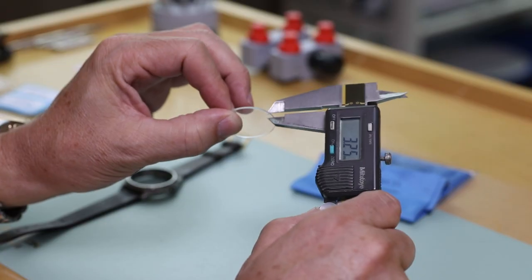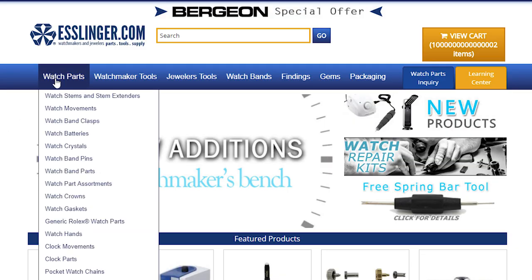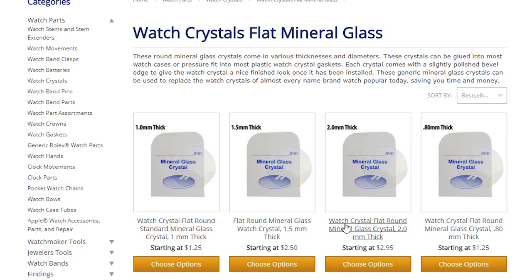The thickness of the crystal can be measured using your caliper. Once you have the right measurement, you can order your replacement crystal at Esslinger.com.